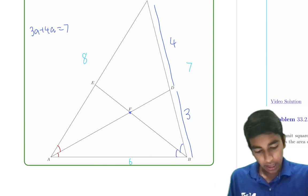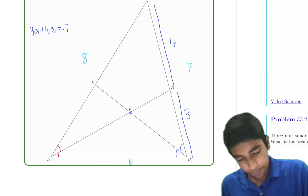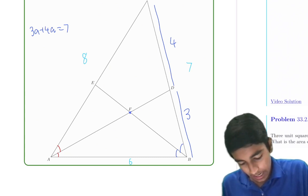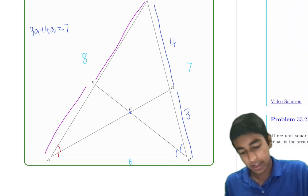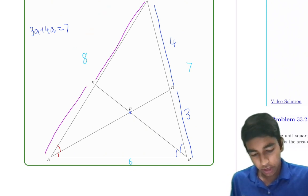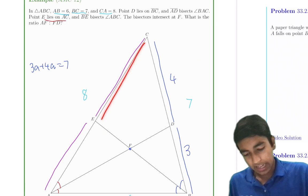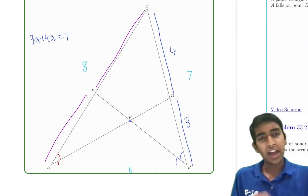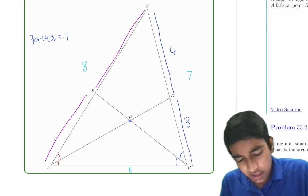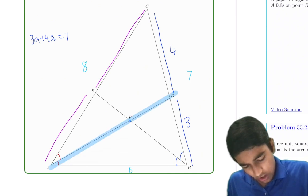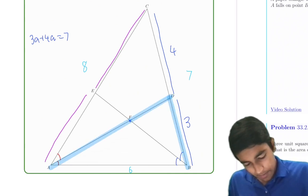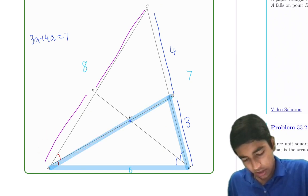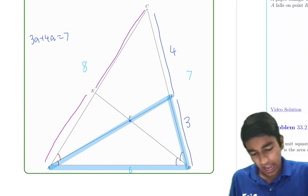What does angle bisector theorem tell us? We could use it to find CE and AE as well, because we know the total length is 8. But that won't really help us much, because we're not trying to find CE or AE. We're trying to find AF and FD. So it almost seems like maybe it's just part of this triangle, because we're trying to find the ratio AF to FD, not AE to CE.